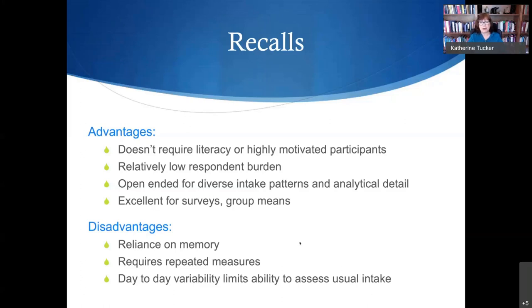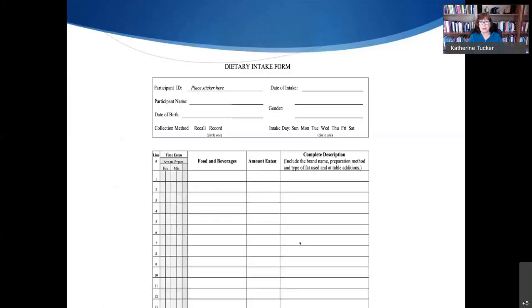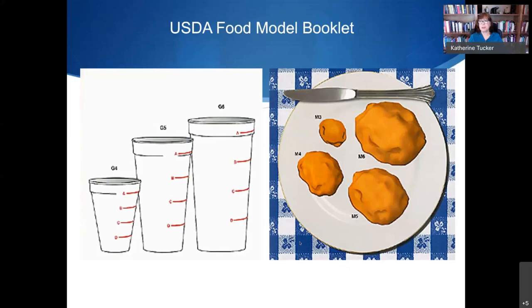Most importantly, day-to-day variability limits the ability to assess usual intake. This is an old-fashioned dietary intake form — almost everything is on the web these days — where you ask about foods and beverages, portion size, and may gather recipe information and brand names. It's always useful to have some kind of portion tools. I use NASCO food models a lot because they're 3D, but these 2D food model portion booklets from the USDA are helpful. They give people a visual reference, because people tend to underestimate their portion sizes.